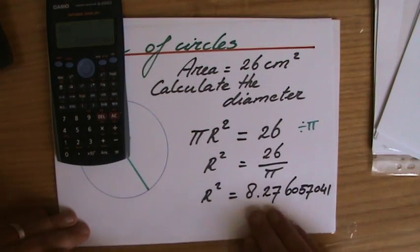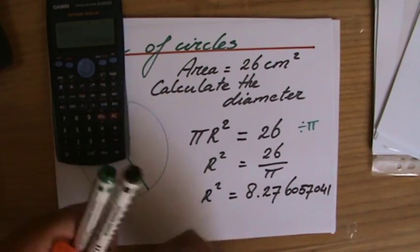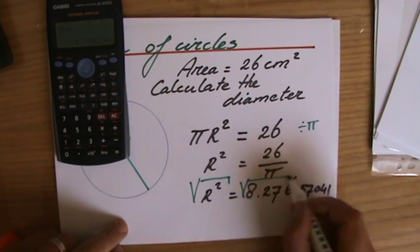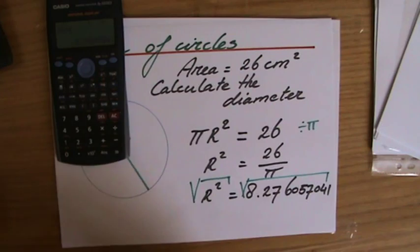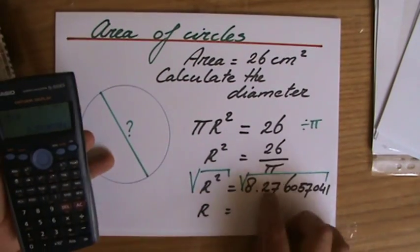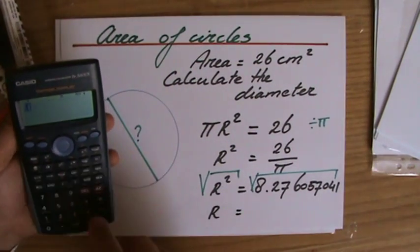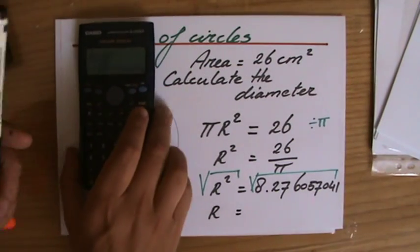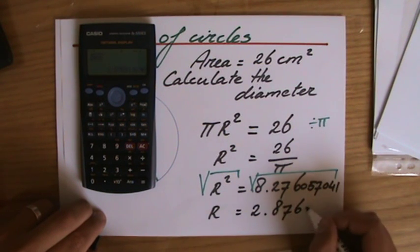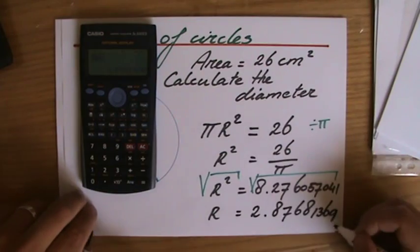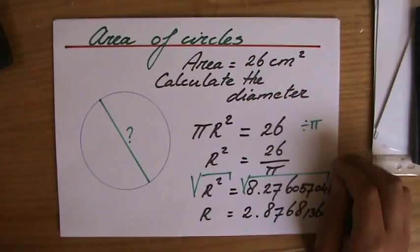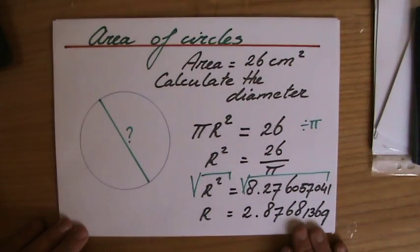Make sure not to write down those decimals because this is not my final answer yet. Because now I have to square root both sides. Because it's r² that equals 8.27 the rest, so r equals the square root of that number. So don't round here because that's gonna mess up your final answer. Square root of my answer equals 2.87681369.